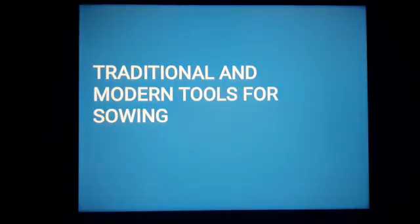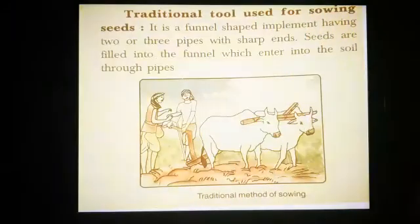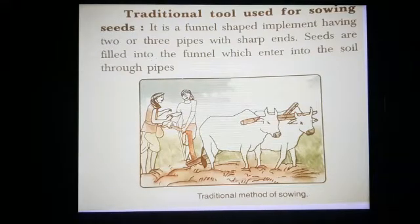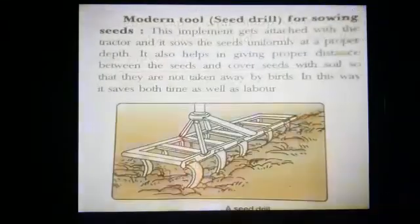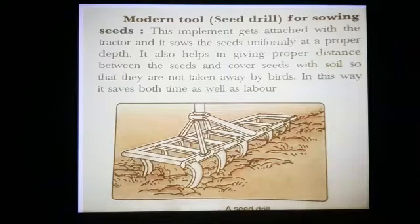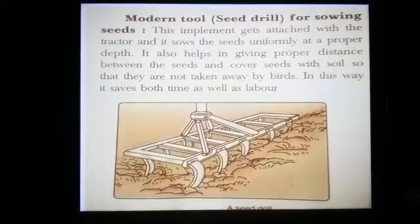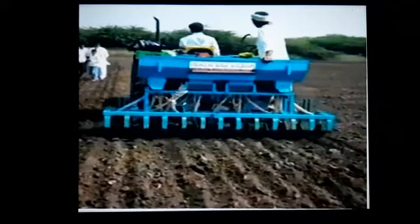Next are the traditional and modern tools for sowing. As you can see in the slide, the traditional tool is the funnel-shaped tool used by farmers. The modern tool is the seed drill for sowing, which is a great advantage for farmers. The seed drill machine, used with tractors, can easily maintain proper depth and proper spacing between seeds.